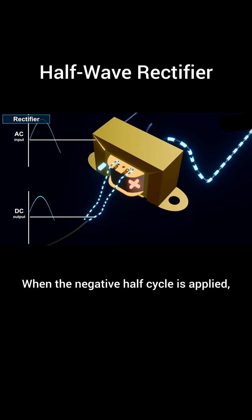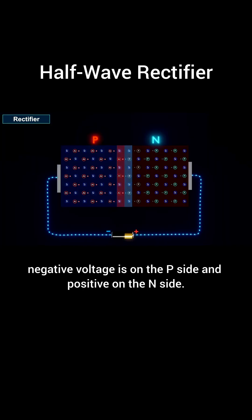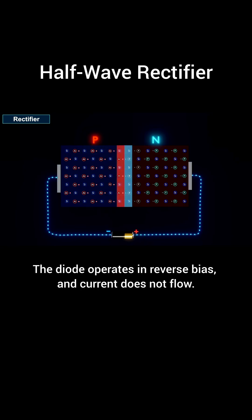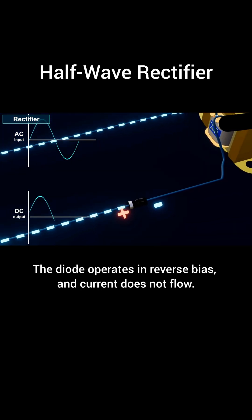When the negative half cycle is applied, negative voltage is on the P side and positive on the N side. The diode operates in reverse bias and current does not flow.